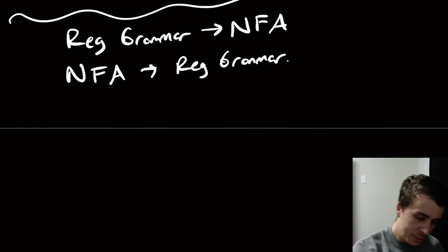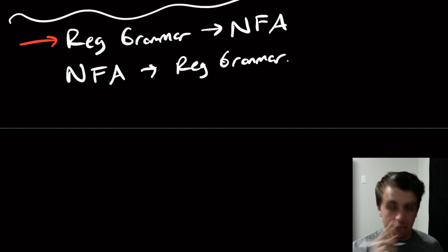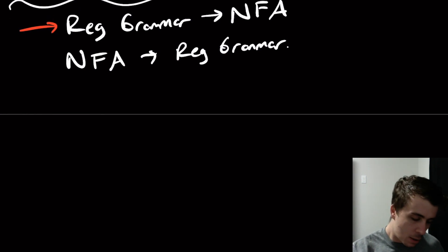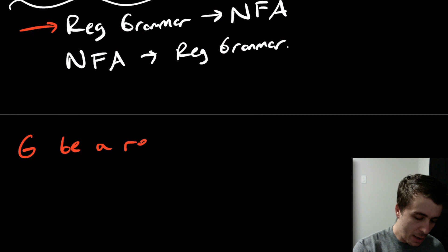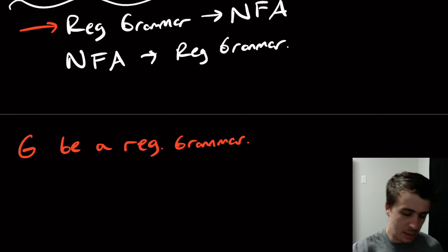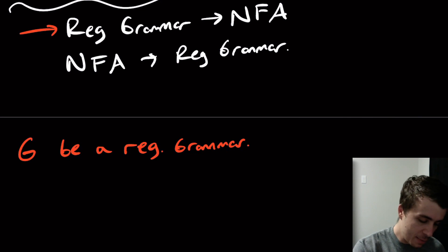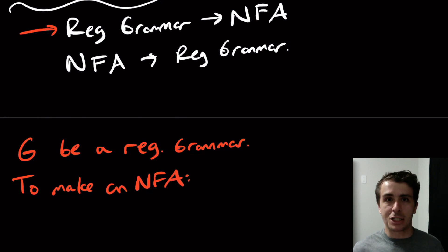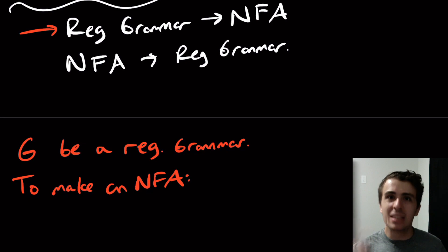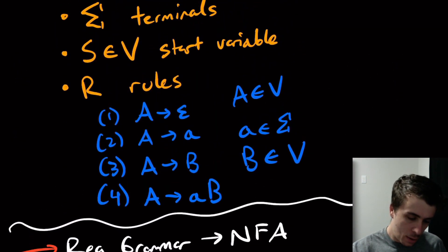Let's show that given a regular grammar G, we can make an NFA that accepts exactly the same language. Making an NFA might seem impossible because a grammar has variables, terminals, and rules, whereas an NFA has states, transitions, and so on — those aren't really the same thing. But let's actually look at the rules.